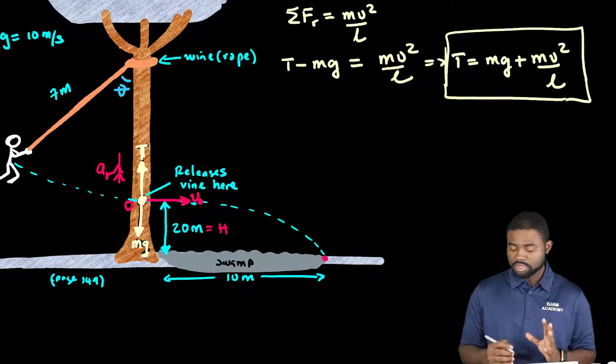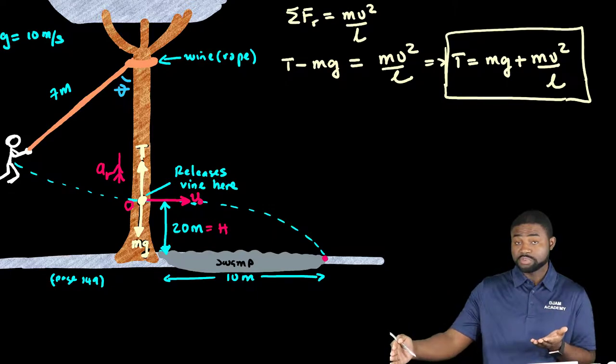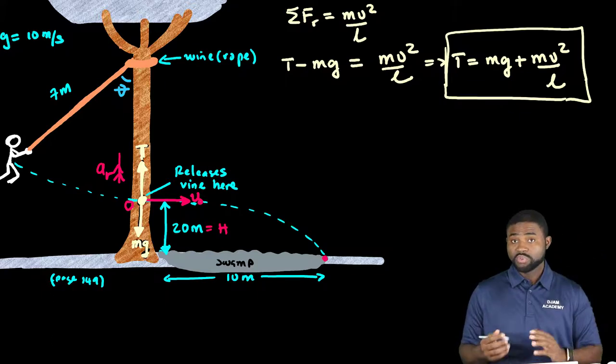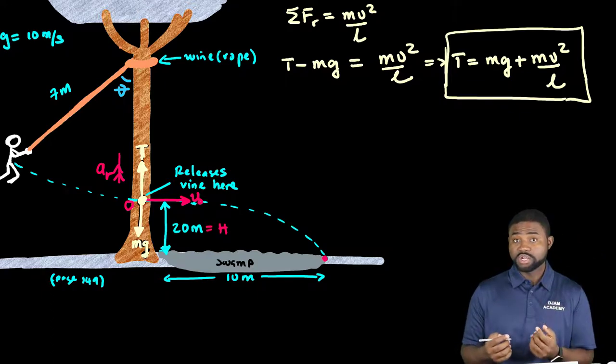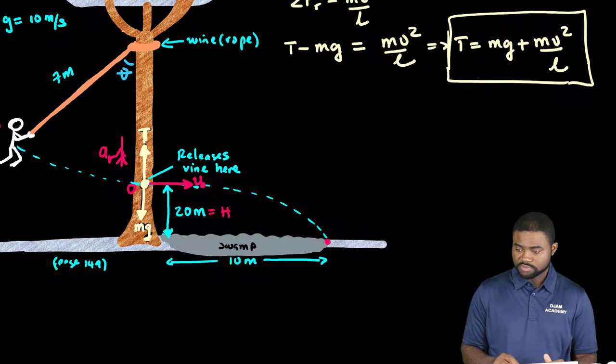The good thing about this problem is we know the range, the horizontal distance he travels before he drops to the floor. And we also know the height he falls. We can use these two values to calculate that horizontal velocity.